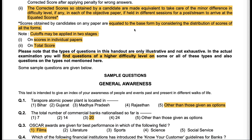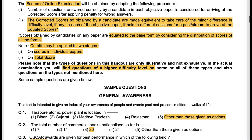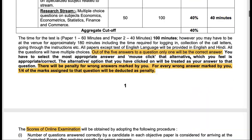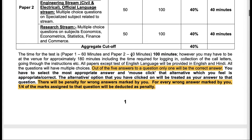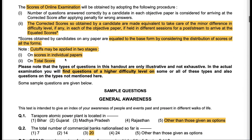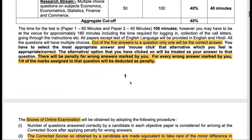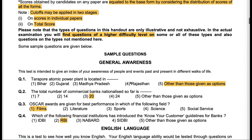Scores obtained by candidates on any paper are equated to the base form by considering the distribution of scores of all forms. Cut-offs may be applied in two stages: on scores in individual papers and on total score. The cutoff is 30% for paper 1 and 40% for paper 2, and there will also be a total cutoff of 40% combining paper 1 and paper 2 of phase 1. However, it has not been clarified whether the cutoff will be only 30% and 40% or whether there is an additional ranking/merit list.